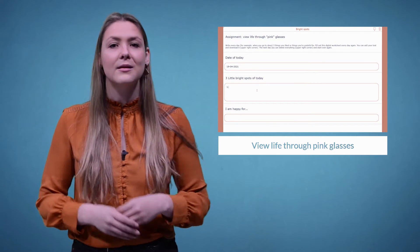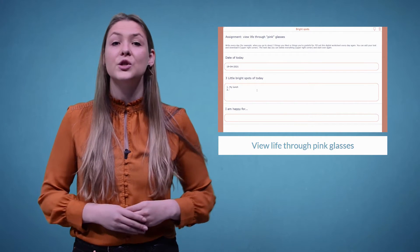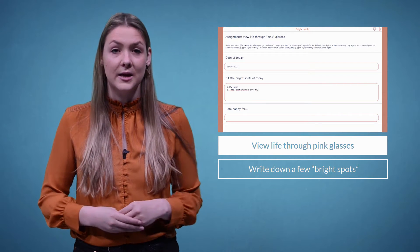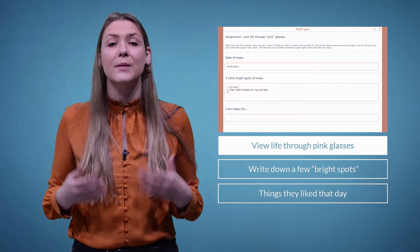The first way to encourage your students to stay positive is by convincing them to view life through pink glasses. In this exercise, students have to write down a few bright spots or things they liked that day. Even the smallest things can be bright spots.